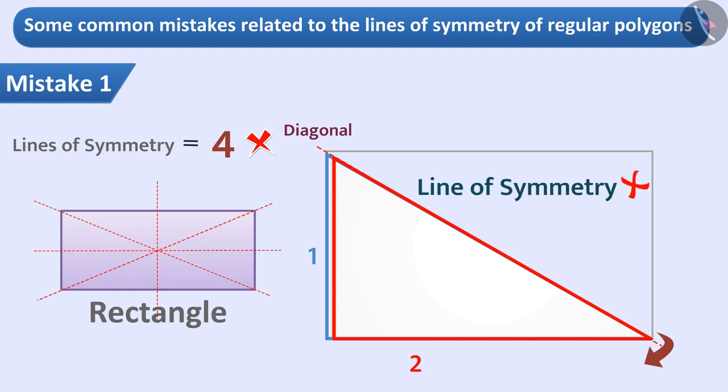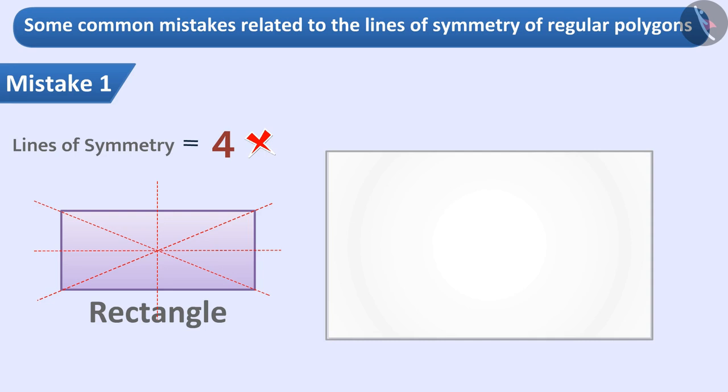The crease on the rectangle obtained by folding along the midpoint of the width or along the midpoint of the length divides the rectangle into two mutually equal parts. A rectangle can have only two lines of symmetry: one passing through the center along the length and one passing through the center along the width.